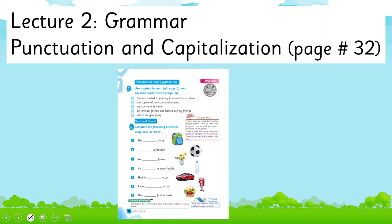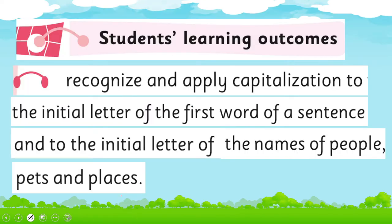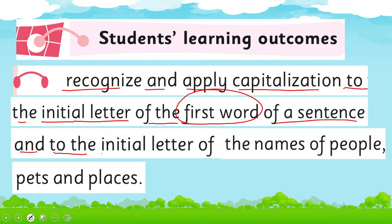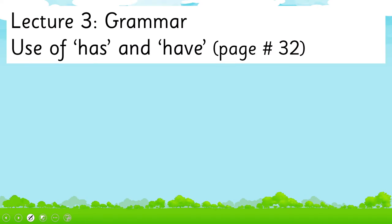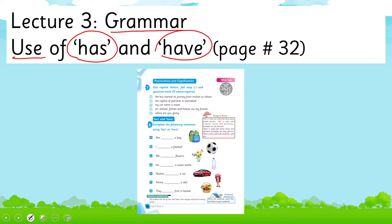Lecture 2 under the title of grammar, we will learn punctuation and capitalization. We'll cover page 32 of your book and the SLO will be to recognize and apply capitalization to the initial letter of the first word of a sentence and to the initial letter of the names of people, pets, and places. Lecture 3, again under the title of grammar, we learn the use of has and have and will cover page 32 of your book.